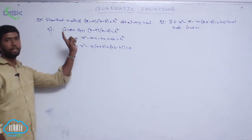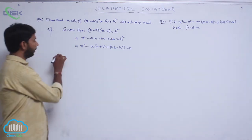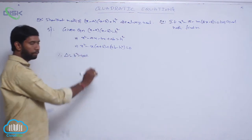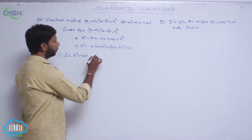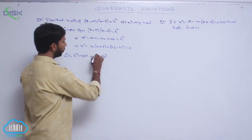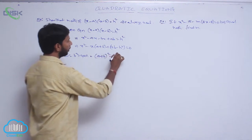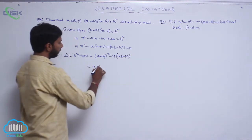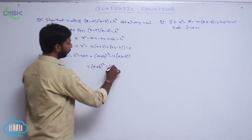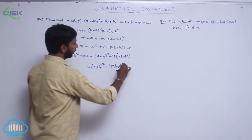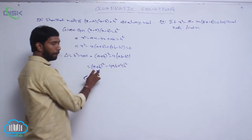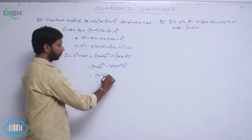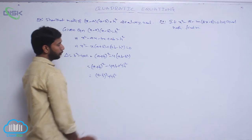To show that the roots are always real, we first find the discriminant, that is b square minus 4ac. Here b equals (a plus b), so the discriminant is (a plus b) whole square minus 4 into (ab minus h square), which equals (a plus b) whole square minus 4ab plus 4h square. This simplifies to (a minus b) whole square plus 4h square.